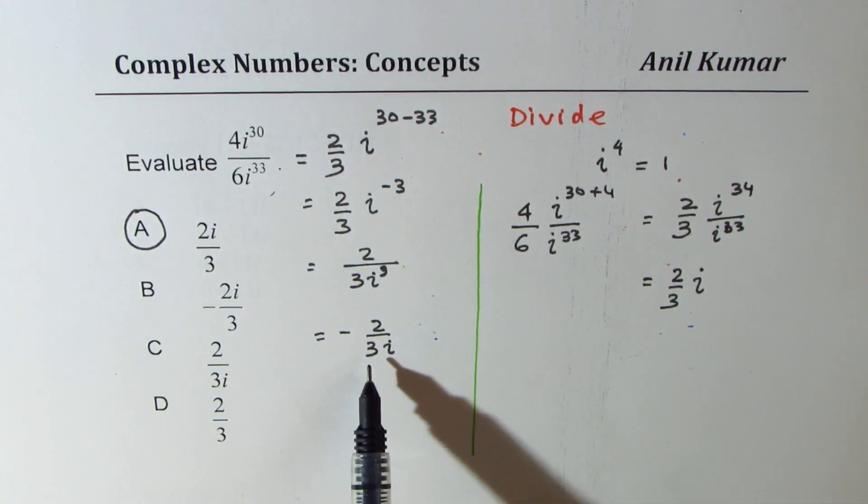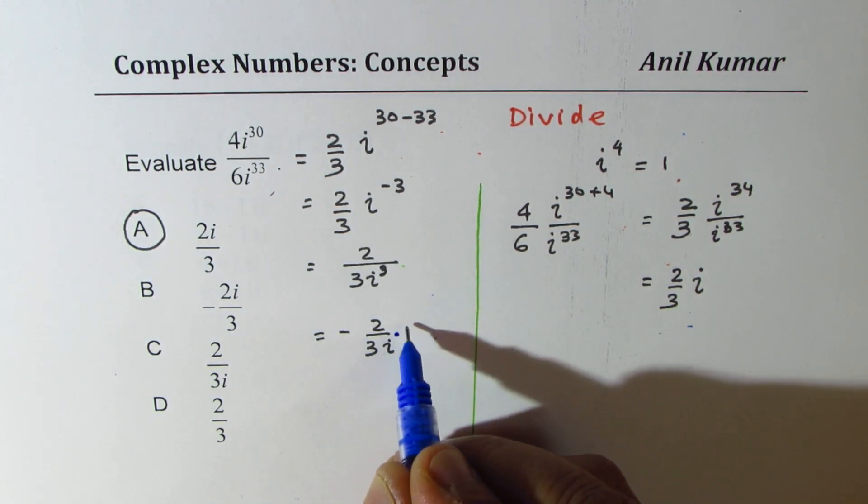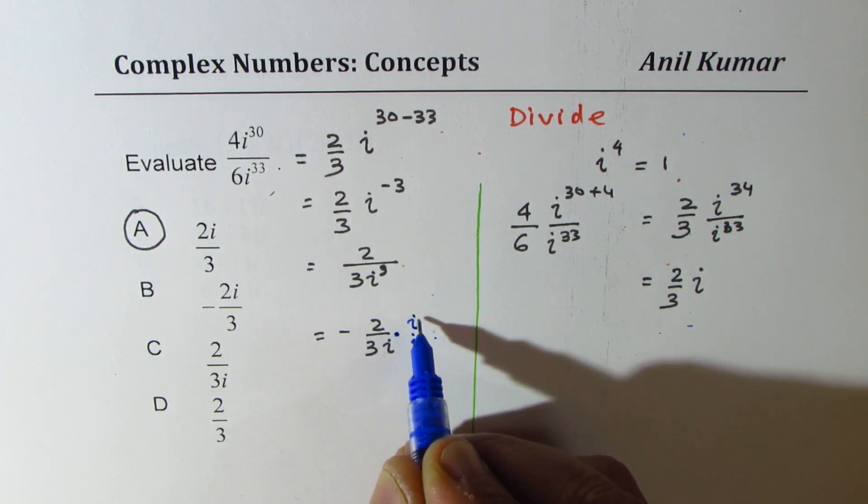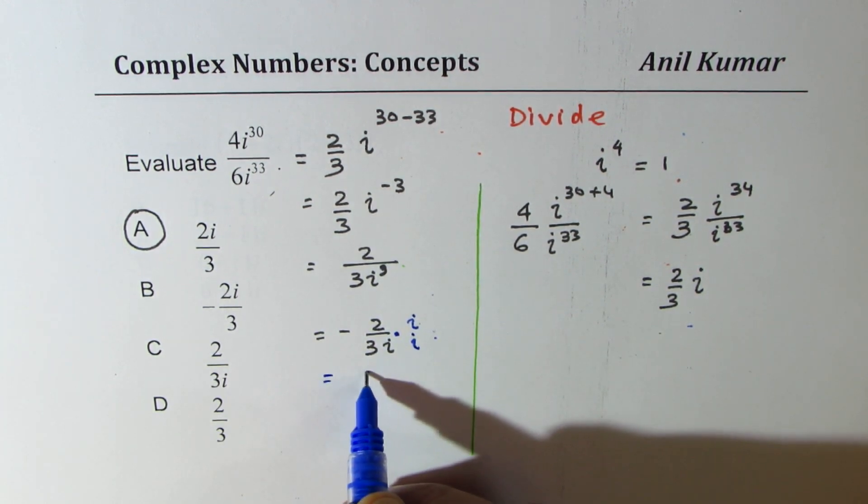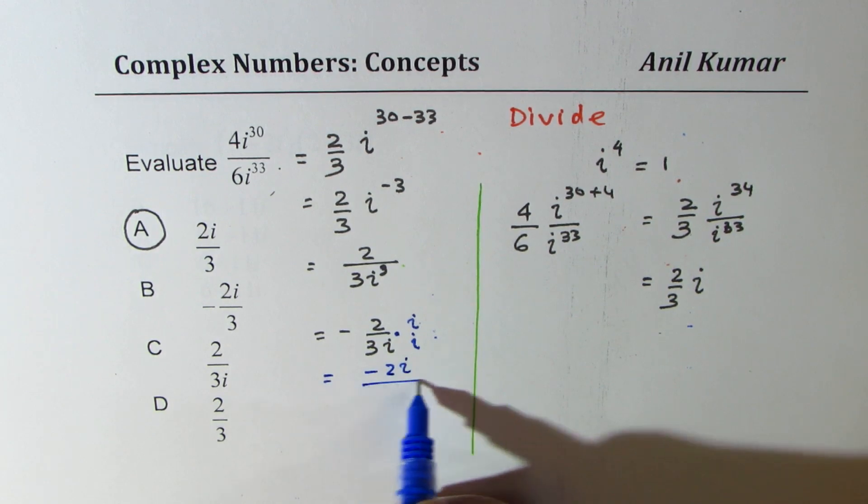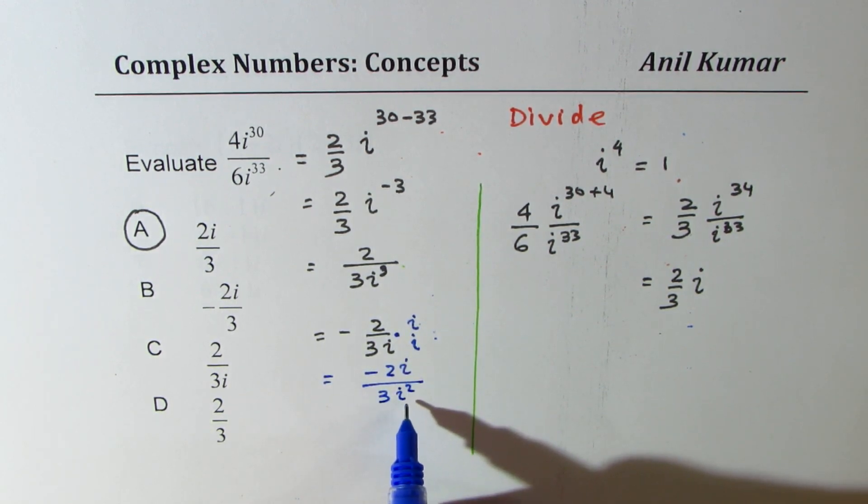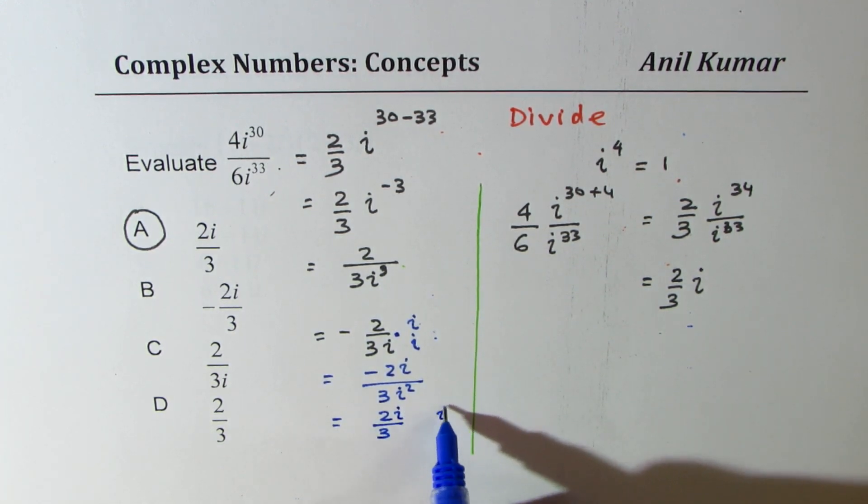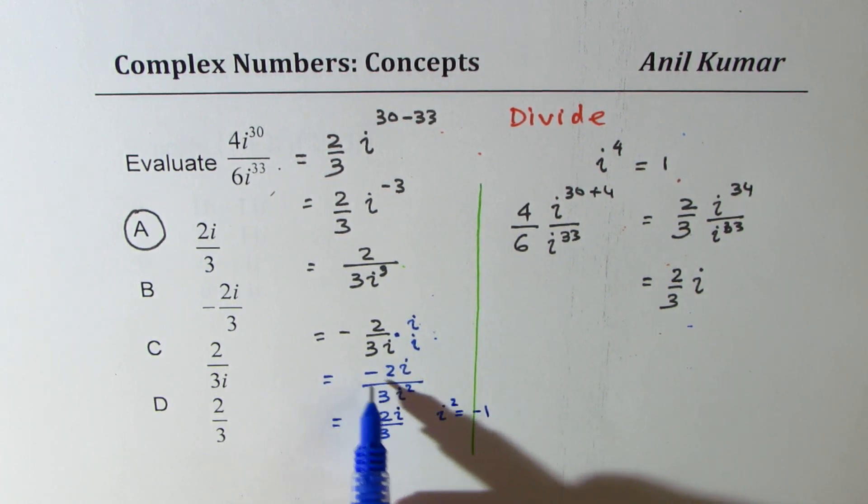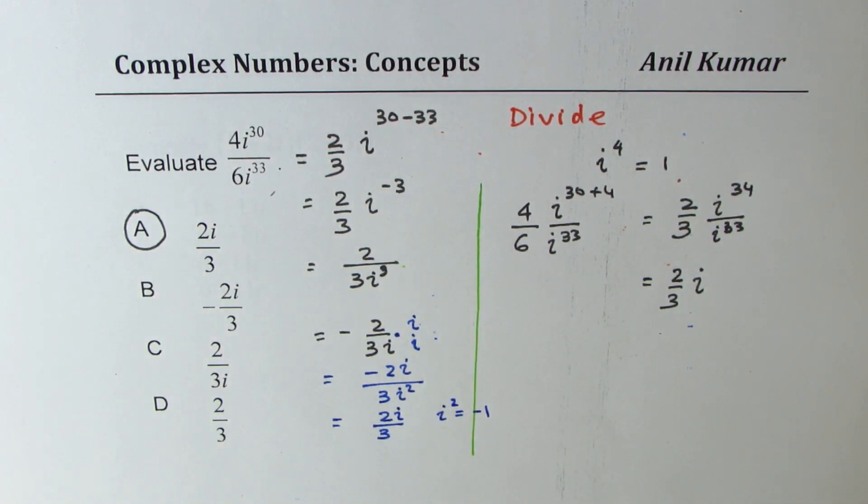Now how do you get the answer after coming to this step? If you solve like this, you need to rationalize. At this stage, you have to multiply by i, both numerator and denominator. So what you get is minus 2i over 3i squared, which is negative 1. So now you could write this as 2 over 3i, since i squared is negative 1.